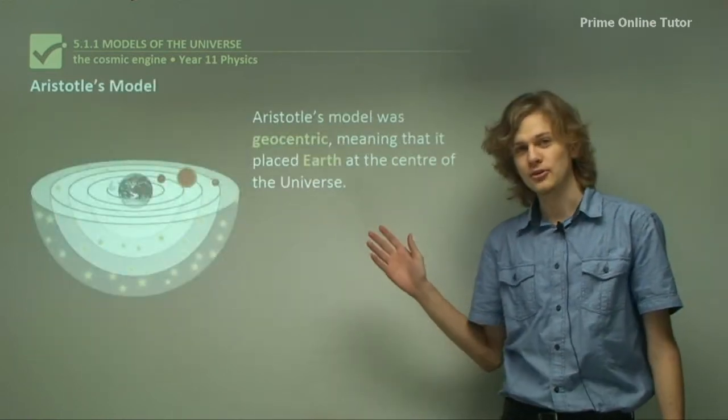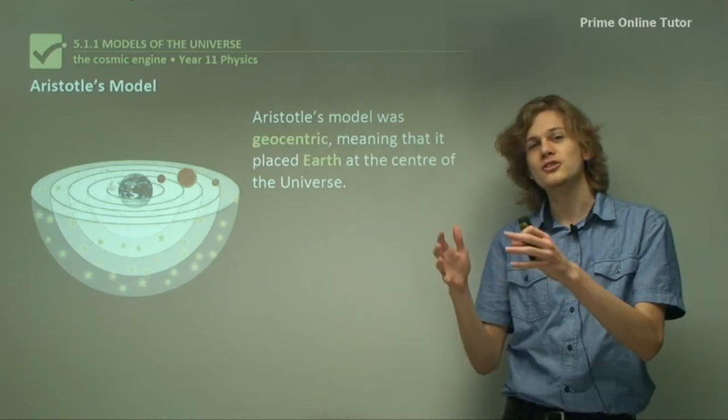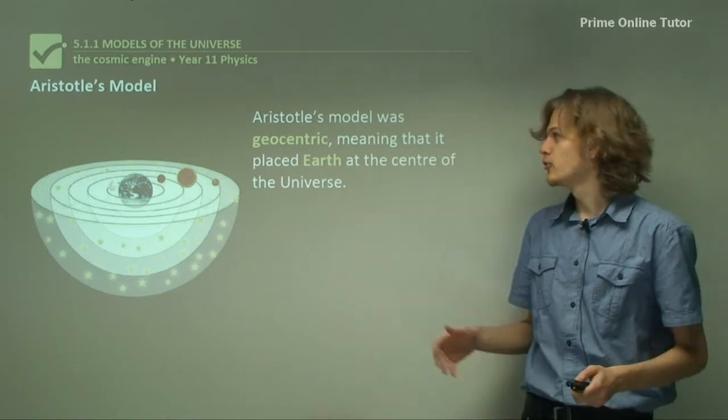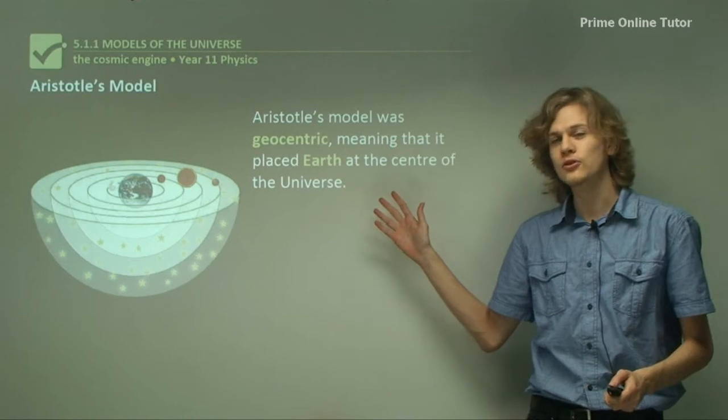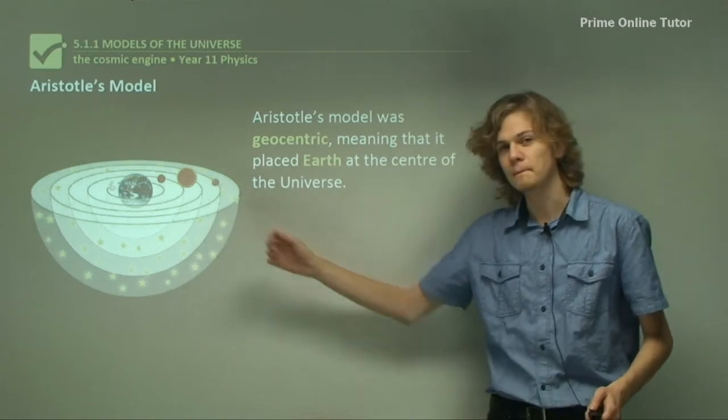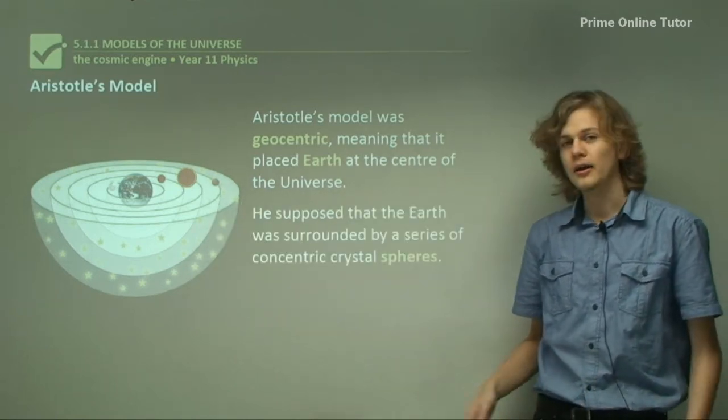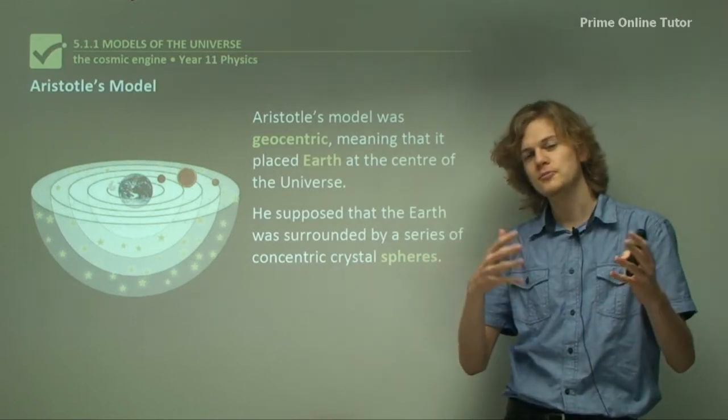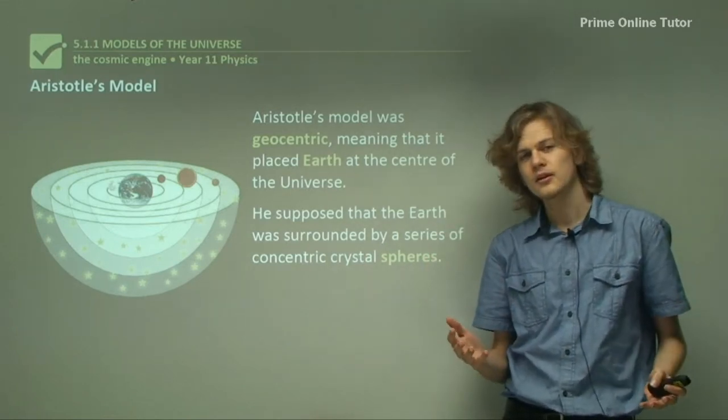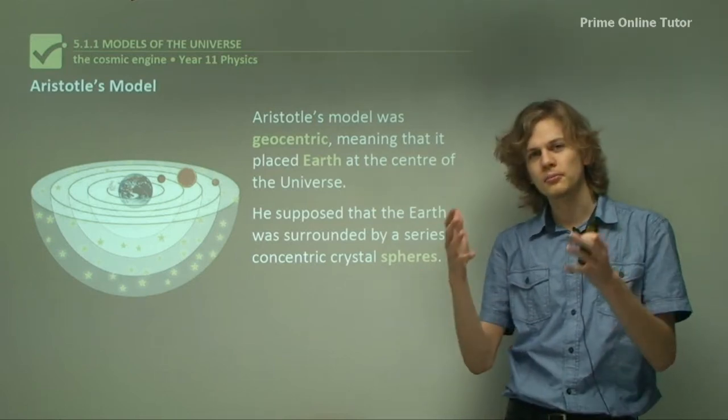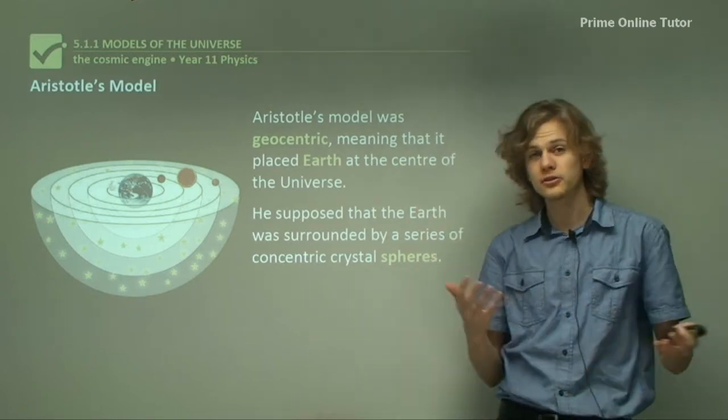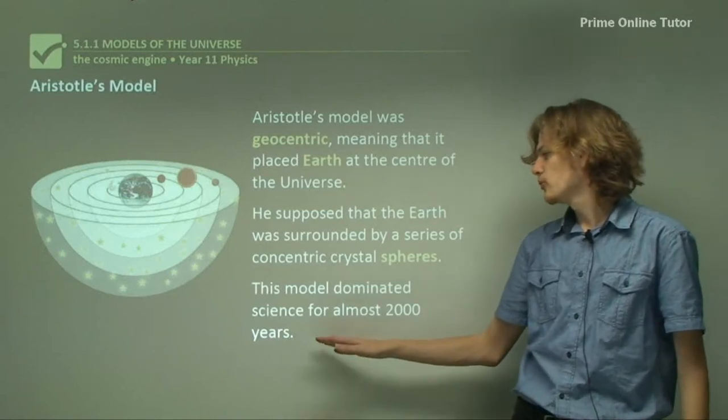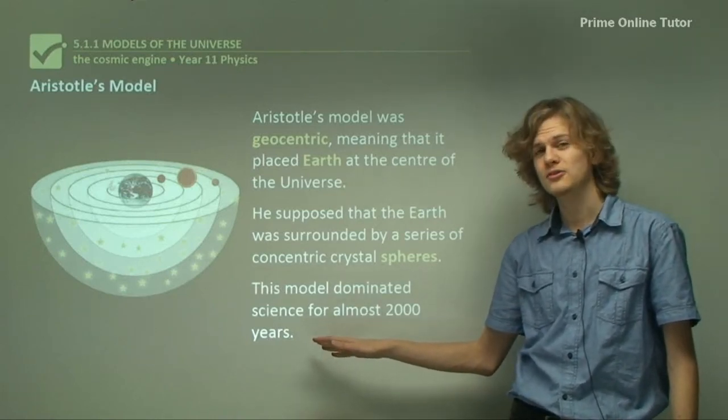So Aristotle's model was geocentric. Geocentric means Earth-centered and so it placed Earth at the center of the universe. Aristotle supposed that Earth was surrounded by a series of transparent crystalline spheres. Within each sphere was embedded a planet and on the outermost sphere there were the stars. This model dominated science for almost 2,000 years.